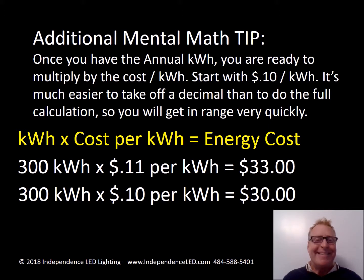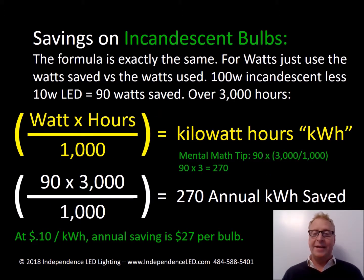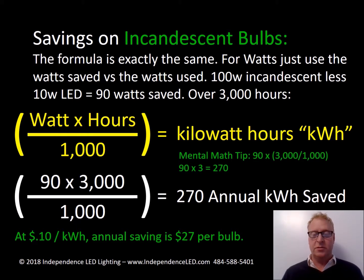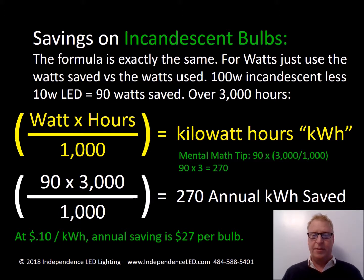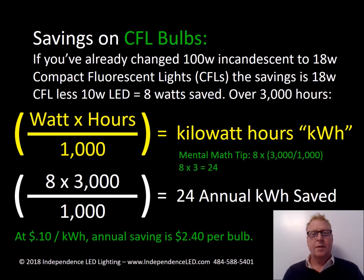Now, saving on an incandescent bulb: the formula is exactly the same for savings as it is for consumption — just use the watts saved versus the watts used. A 100W incandescent less a 10W LED is 90 watts saved over the same 3,000 hours. With the mental math, 90 times 3 is 270 annual kilowatt hours saved — that's saving $27 per bulb per year.